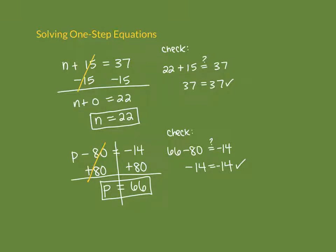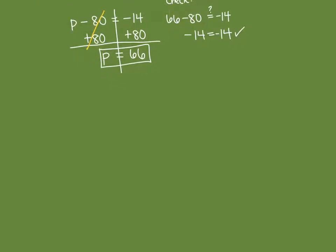Now let's do one with fractions: 2-thirds x equals 28. I'm saying 2-thirds times some number x equals 28. To undo this we want to do the opposite — since we're multiplying by 2-thirds, we want to divide by 2-thirds. We can see that 2-thirds divided by 2-thirds becomes 1, canceling those out to leave 1x.